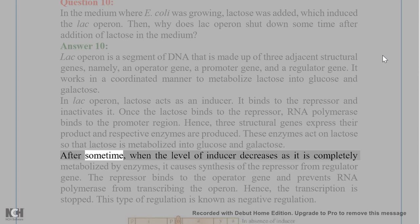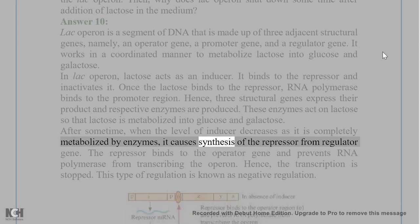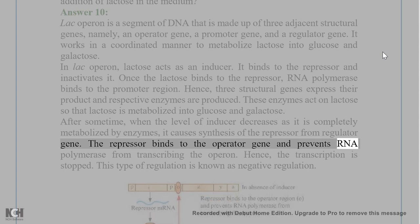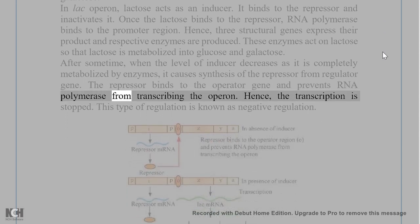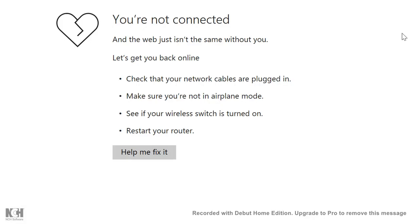After some time, when the level of inducer decreases as it is completely metabolized by enzymes, it causes synthesis of the repressor from the regulator gene. The repressor binds to the operator gene and prevents RNA polymerase from transcribing the operon. Hence, the transcription is stopped. This type of regulation is known as negative regulation.